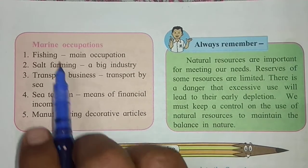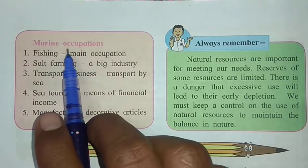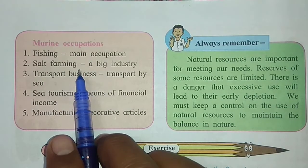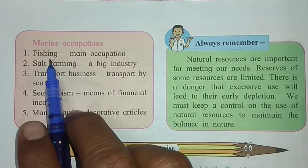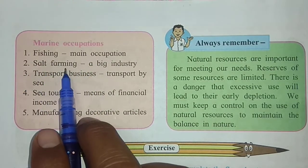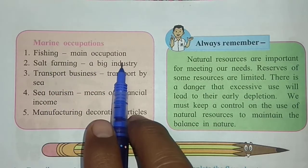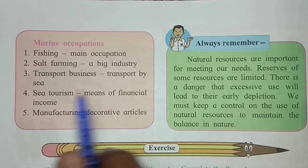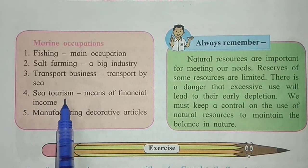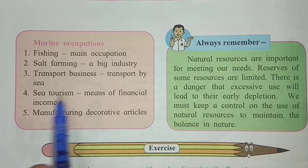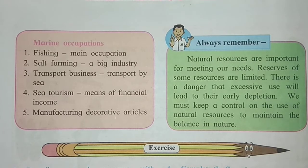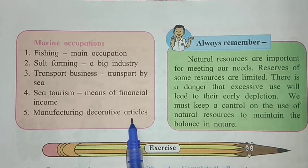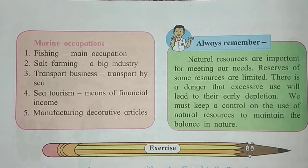On the next page, two boxes are given about marine occupations — the occupations that run on the oceans, just like farming runs on land. Number one: fishing is the main occupation. Number two: salt farming. Number three: manufacturing decorative articles. These industries provide employment and income to many people.